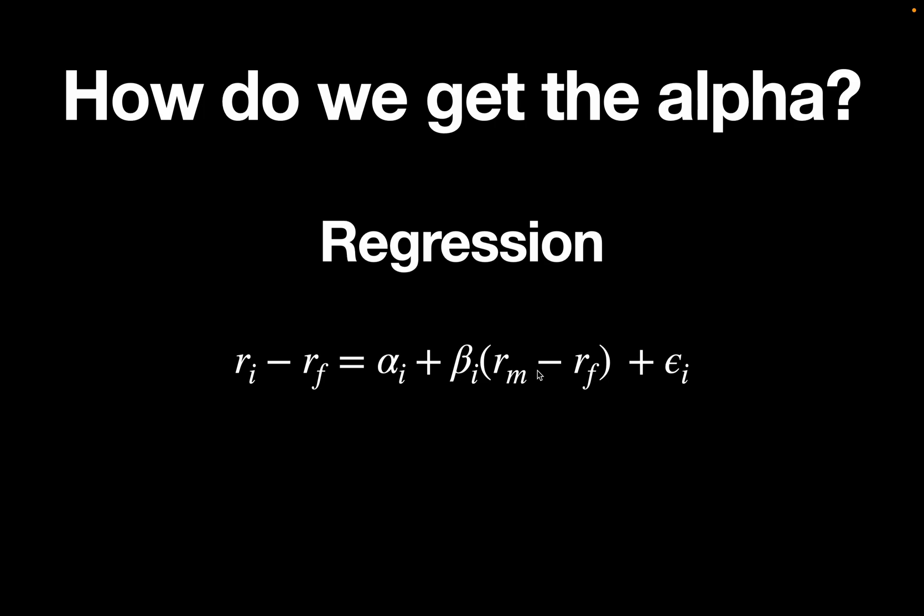The coefficient of the independent variable will be the estimated beta. Think about it. If the beta is giving you the relationship between asset movement and market movement, the slope of this regression line has to be your estimated beta.